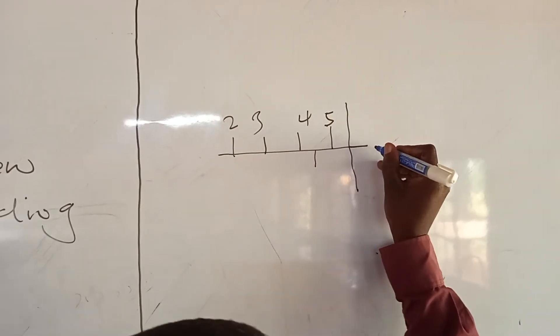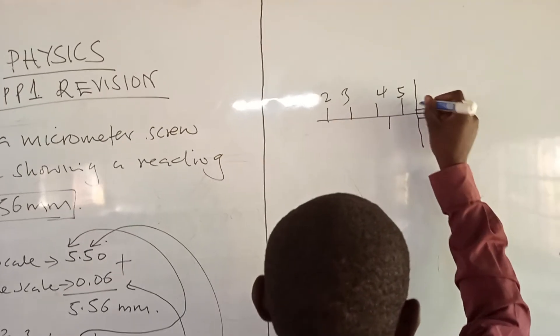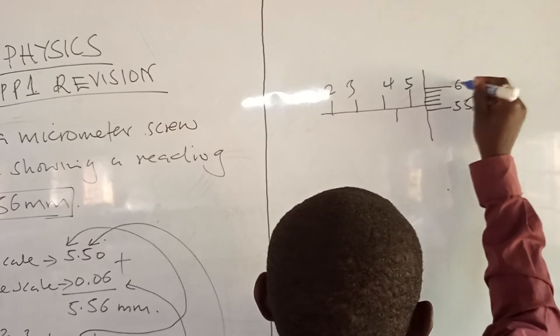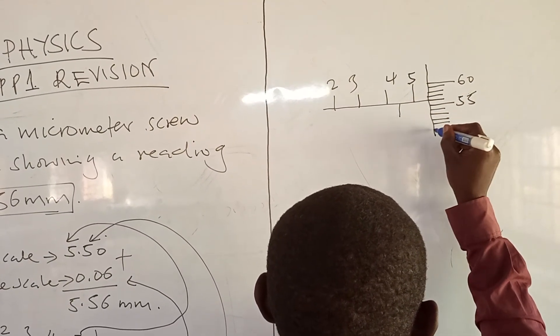But then the thimble scale should be 0.56, meaning the mark coinciding with the axis should be 5.6. This one means that there is 5.5 below it and then 5.6, so 5.7, 5.8, 5.9, 6.0, and then you also have 5.4, 5.3, 5.2, 5.1, 5.0.